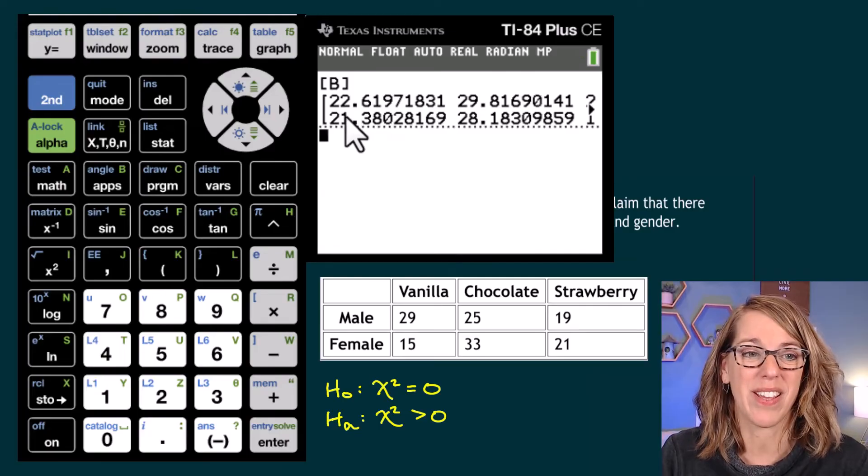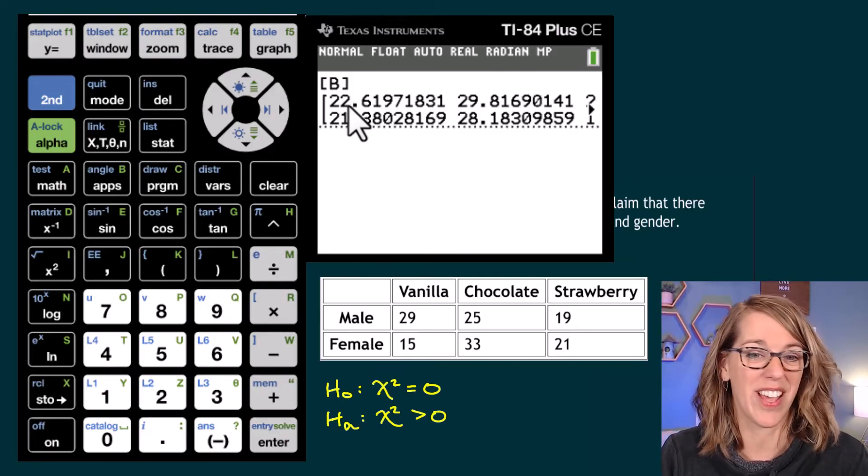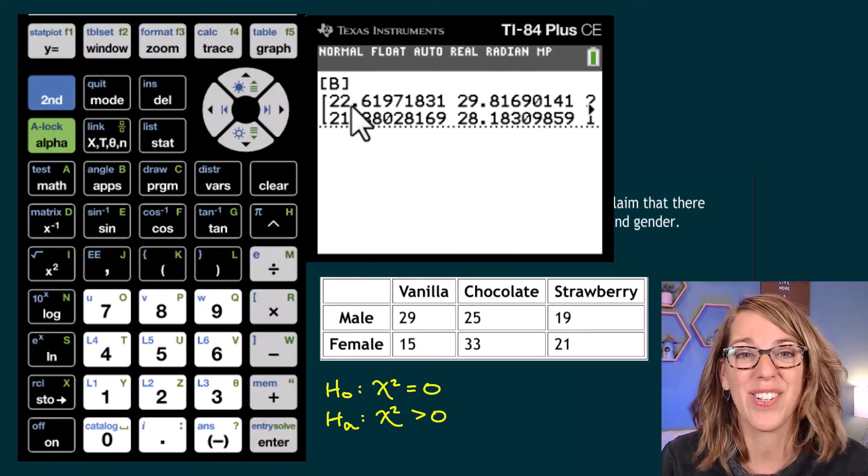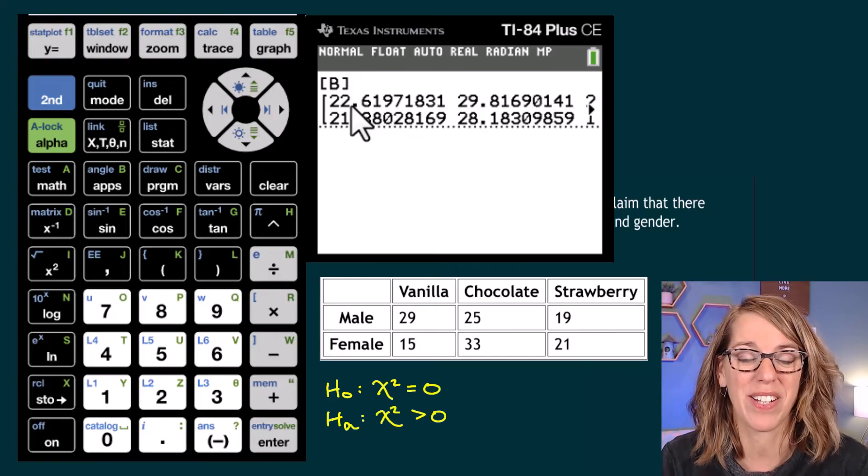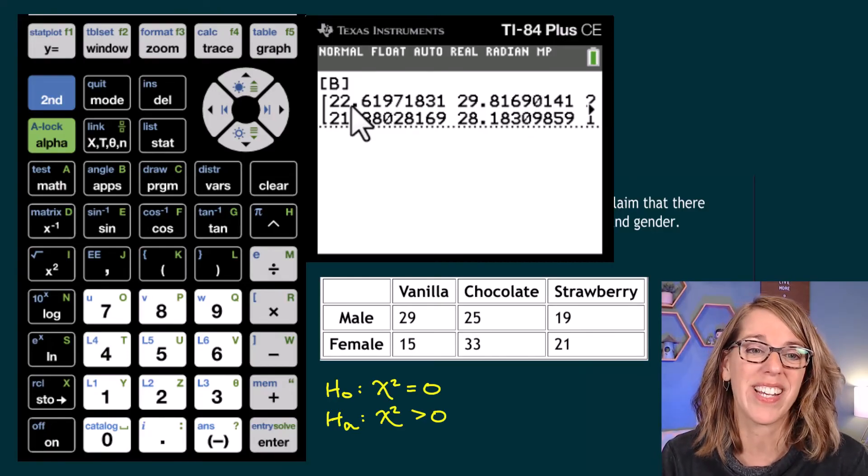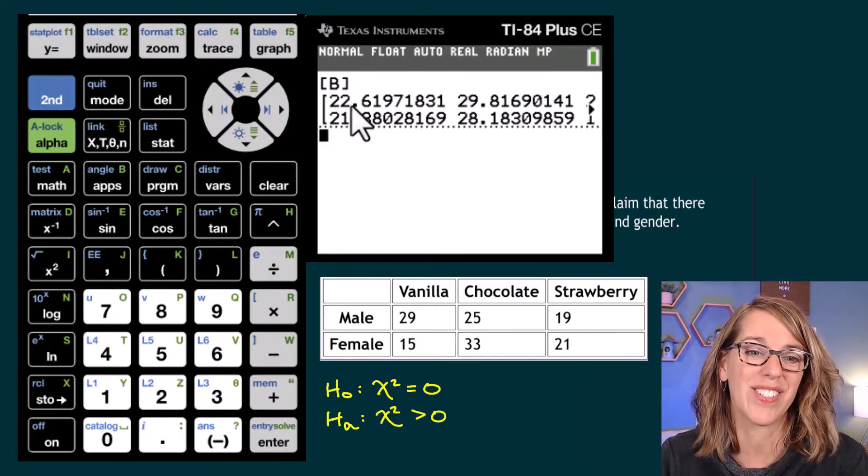And I can see that I've got my expected values there. So no need to do that calculation to find your expected values. So 22.6, 29.8, and so on.